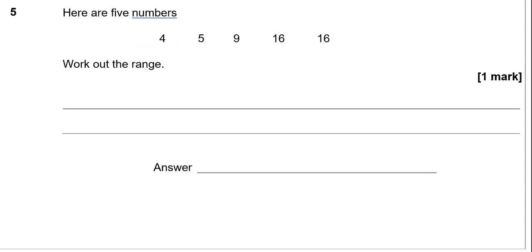Here are 5 numbers. We've got 4, 5, 9, 16 and 16. Work out the range. So the range is the difference between the highest and the lowest numbers. The highest is 16 and the lowest is 4. So 16 take away 4 gives us 12. And 12 is the range.